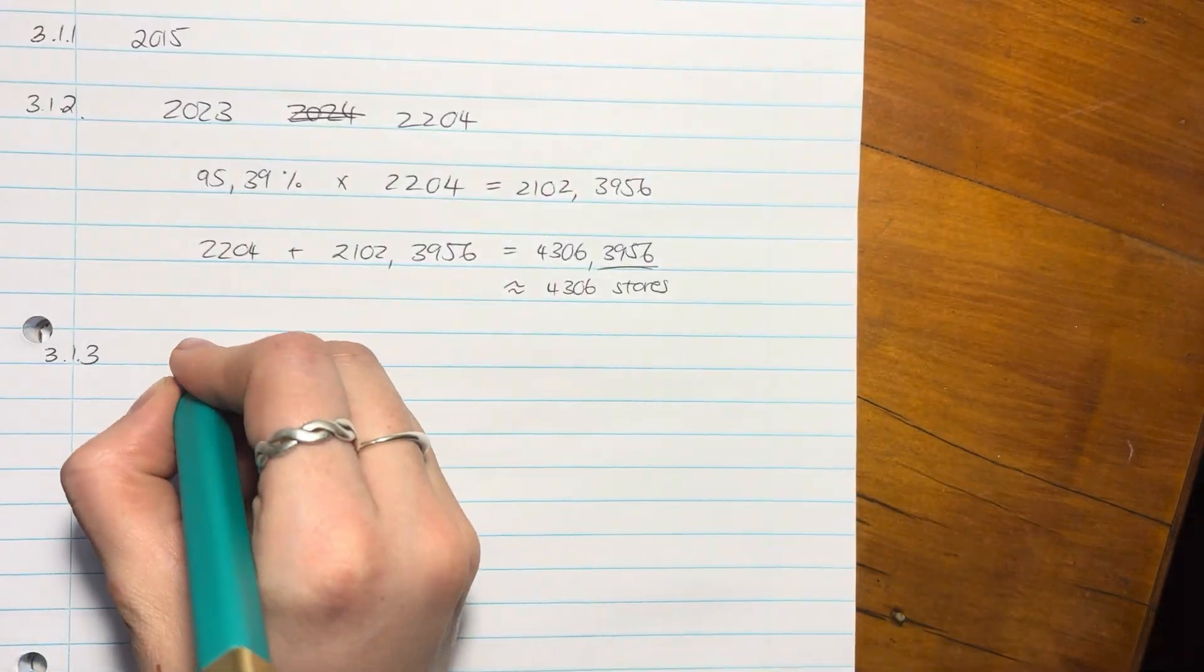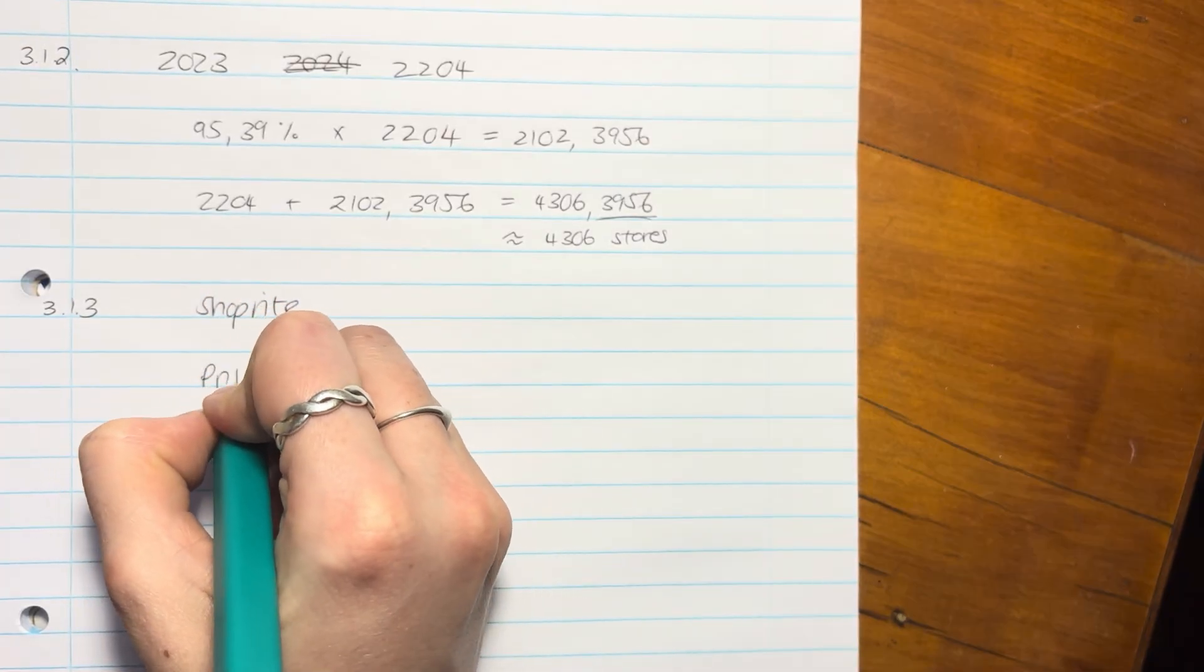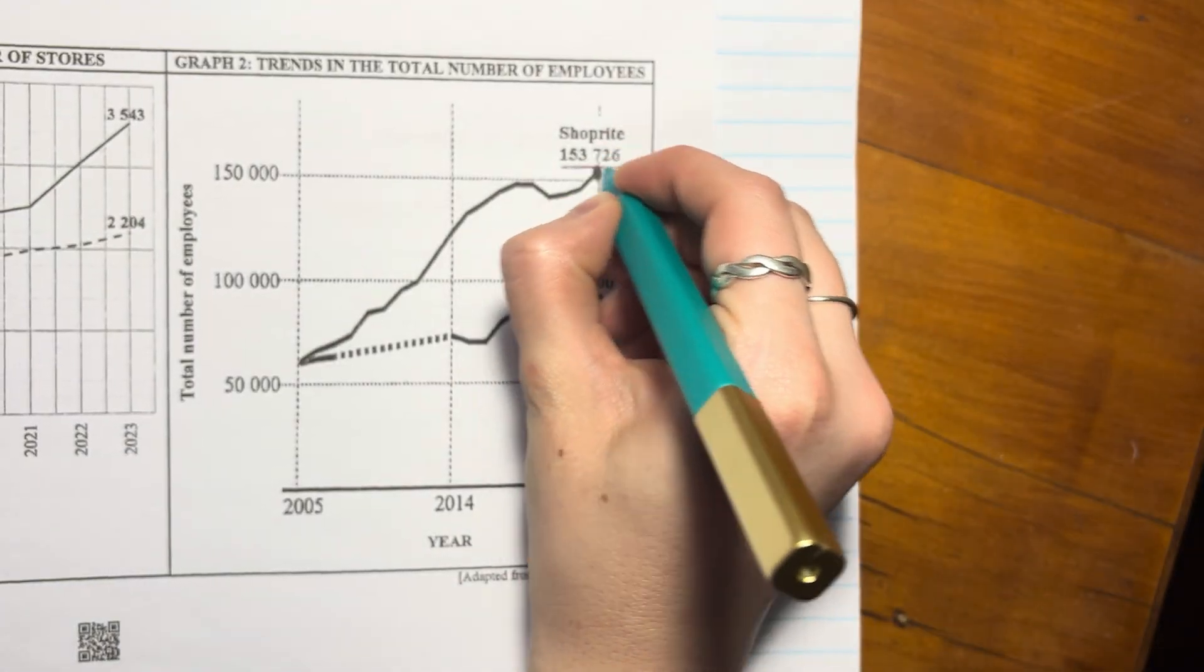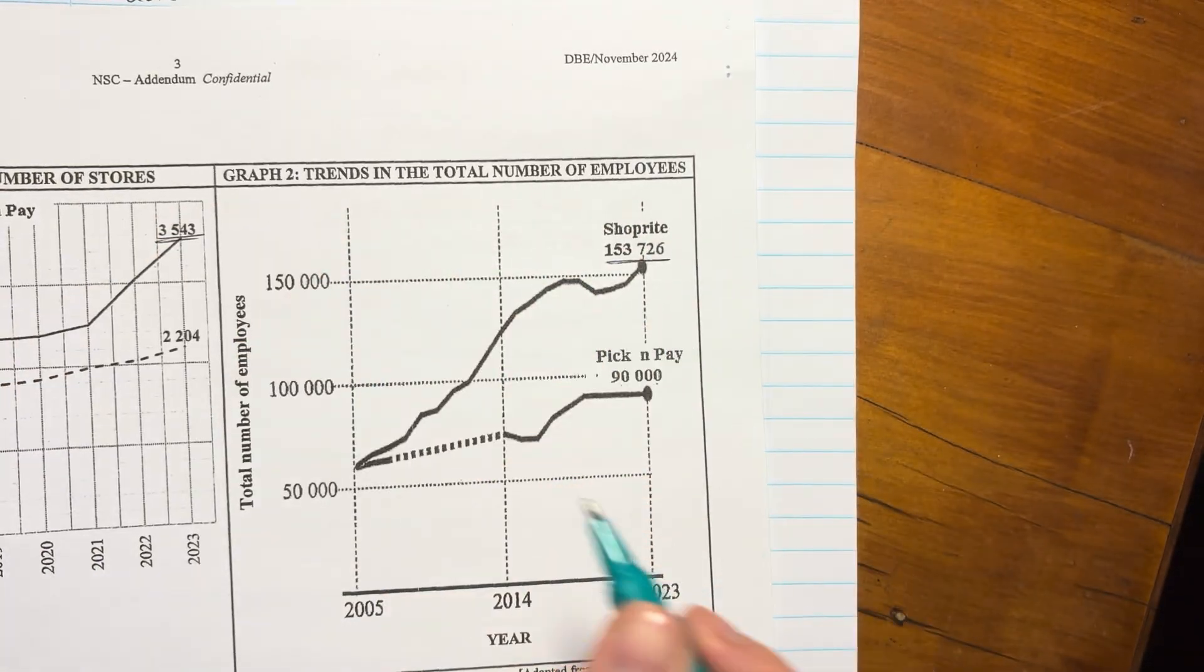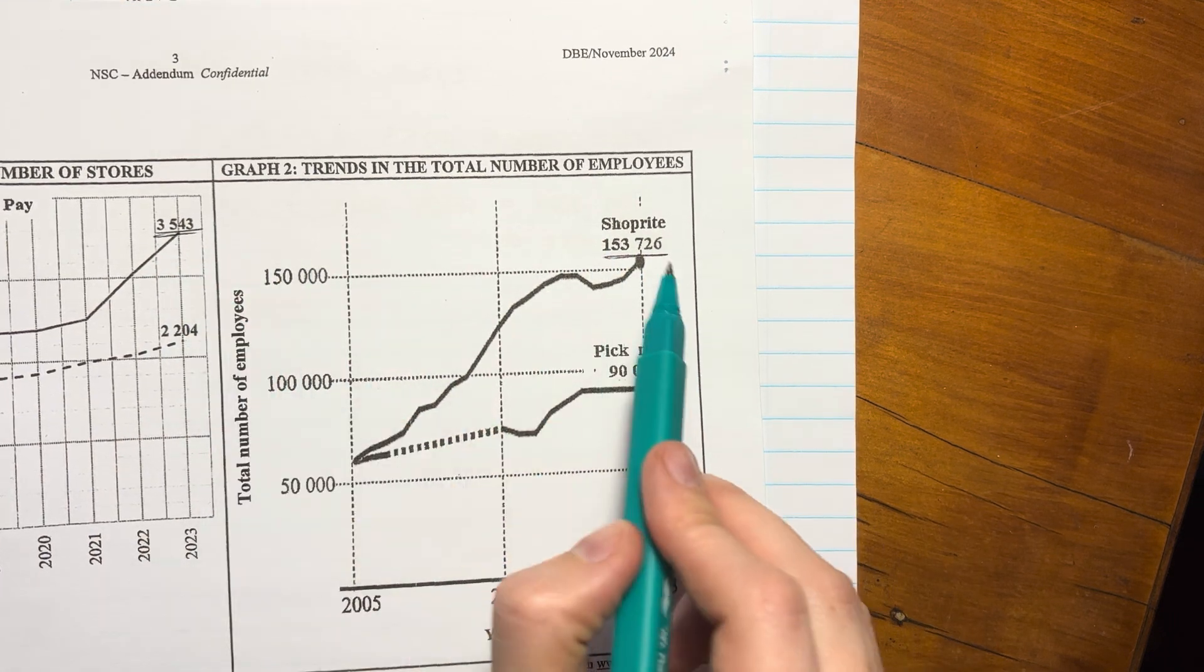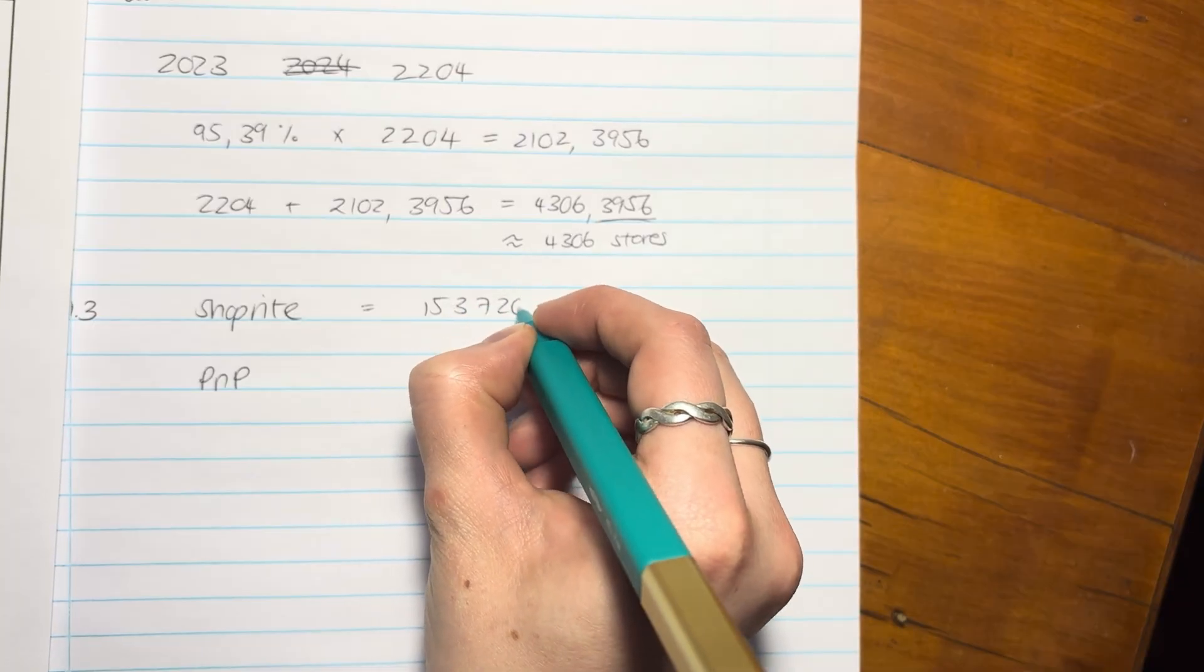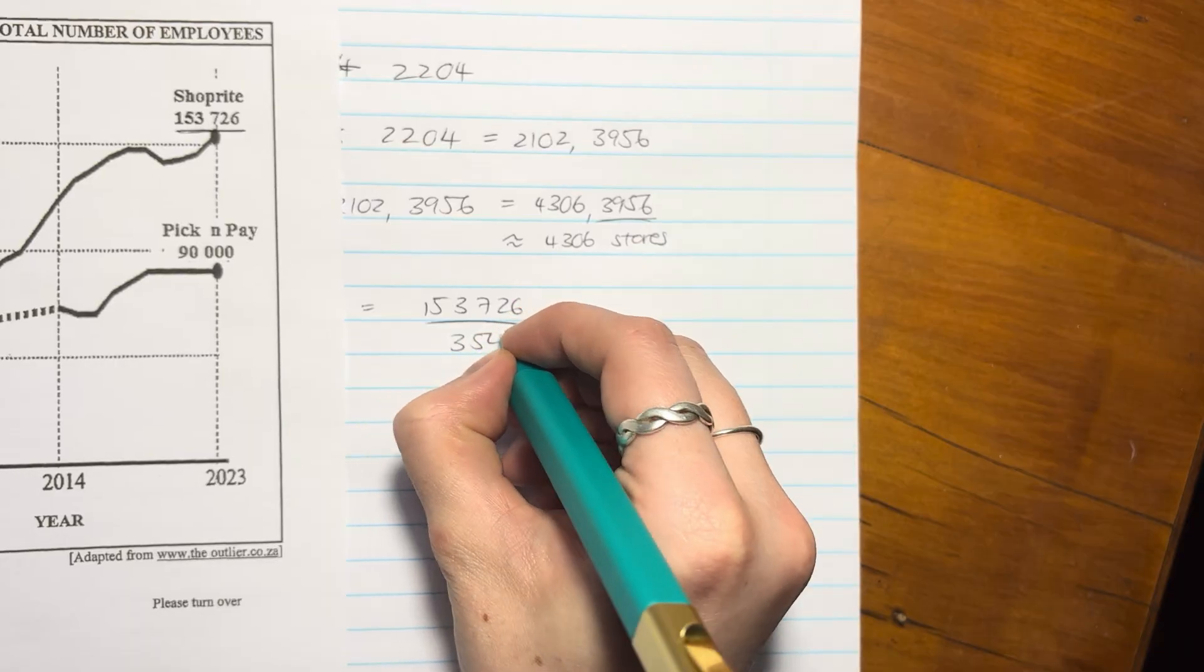Okay, so let's work out ShopRite. So it's 2023, we have to do ShopRite and we have to do Pick n Pay. So at ShopRite, it said the number of employees, right, per store. So ShopRite, we're going to say the 153726 and we're going to divide it by the 3543. So it's saying here's the number of employees divided by the number of stores and then we can figure out how many on average employees do we have per store. So for ShopRite, we're going to say 153726. Importantly, 2023, divided by 3543.